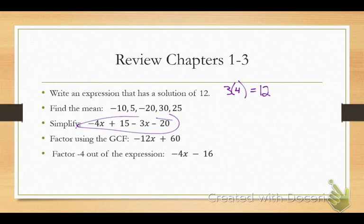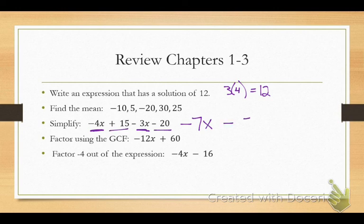What can I simplify here? Negative 4x minus 3x is what? Negative 7x. And what's 15 minus 20? Negative 5. Factor using the GCF. How can I figure out my GCF? List your factors. You're looking for the largest number. Does 12 go into both numbers? Yes. So factor out your 12. And what's left inside if I factor out 12? 1x. And then what is 60 divided by 12? 5. Plus 5. You might want to go back and review that if you don't remember factoring. That's really important.